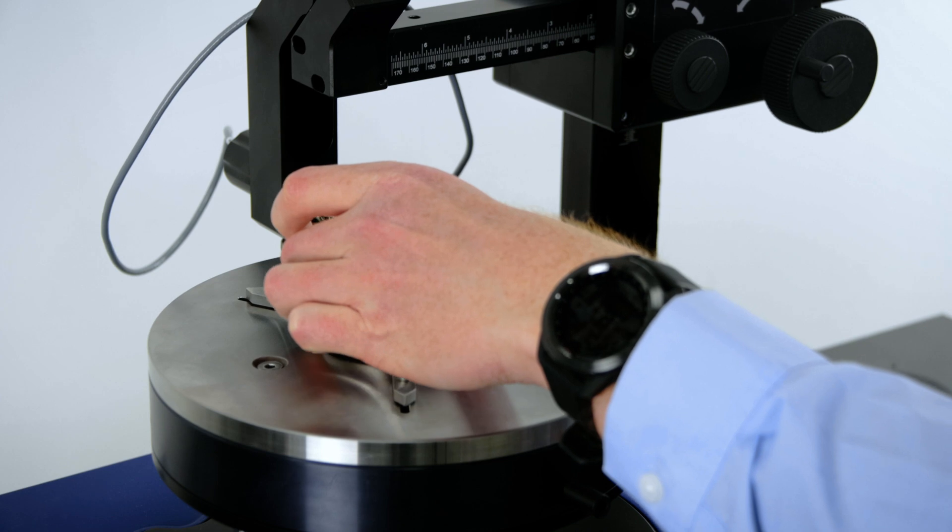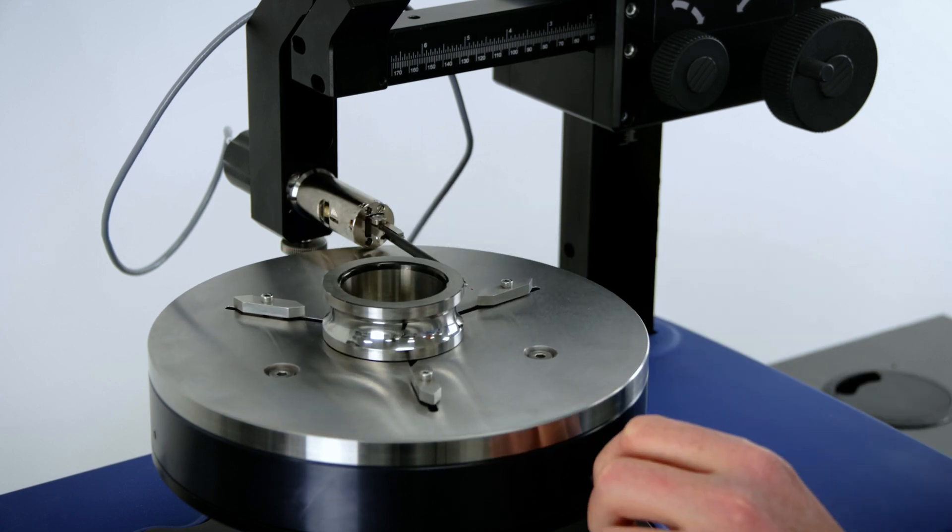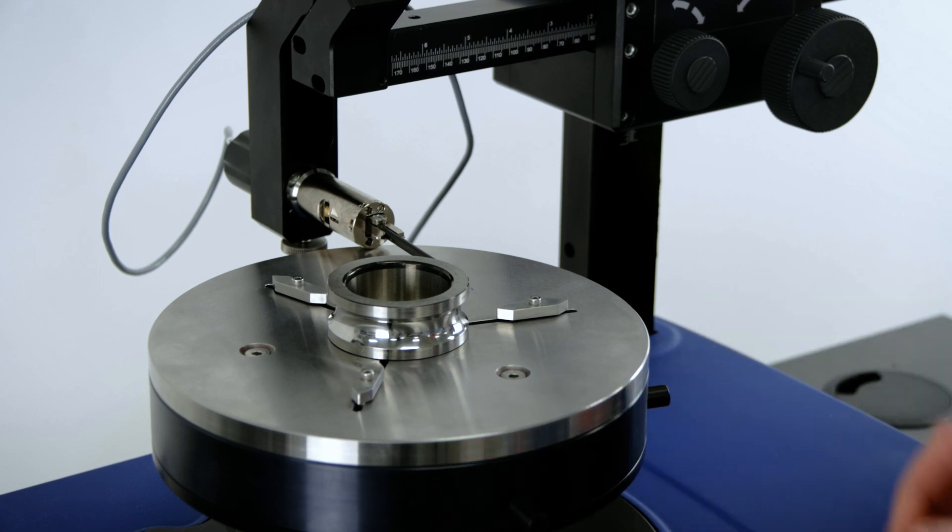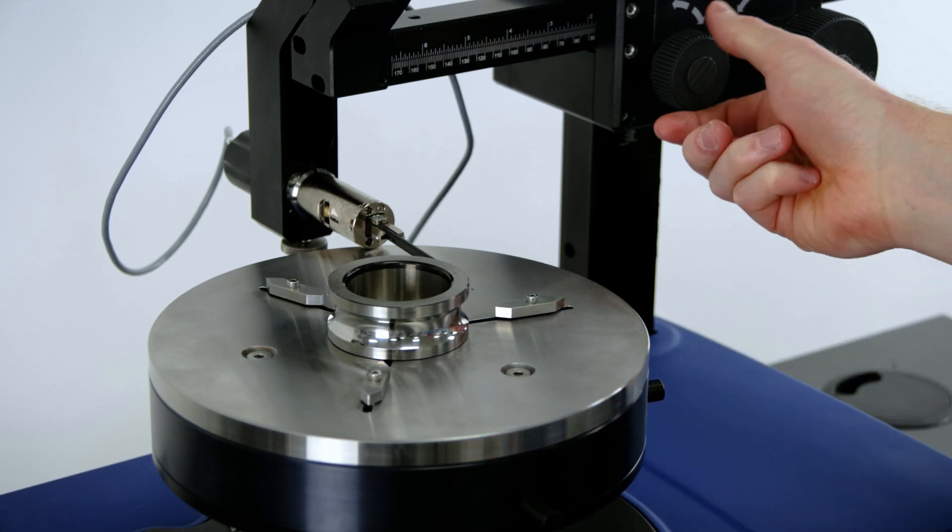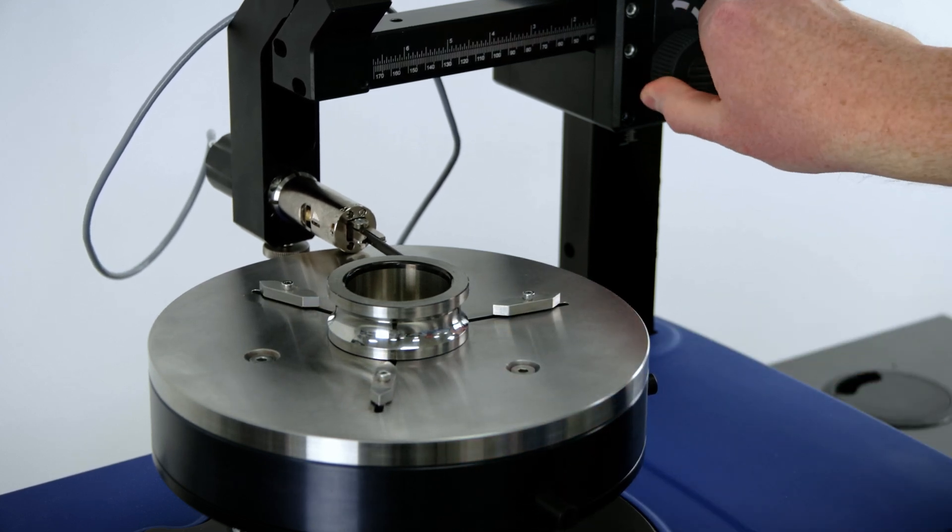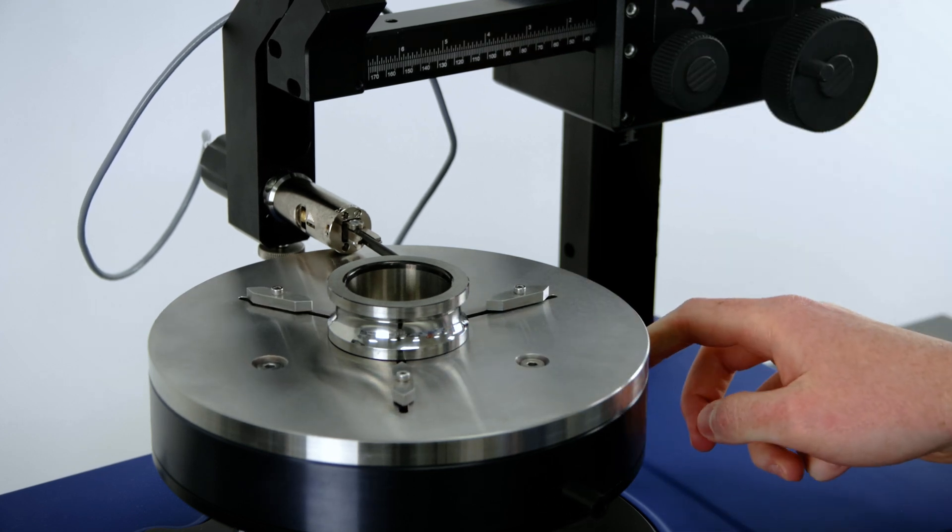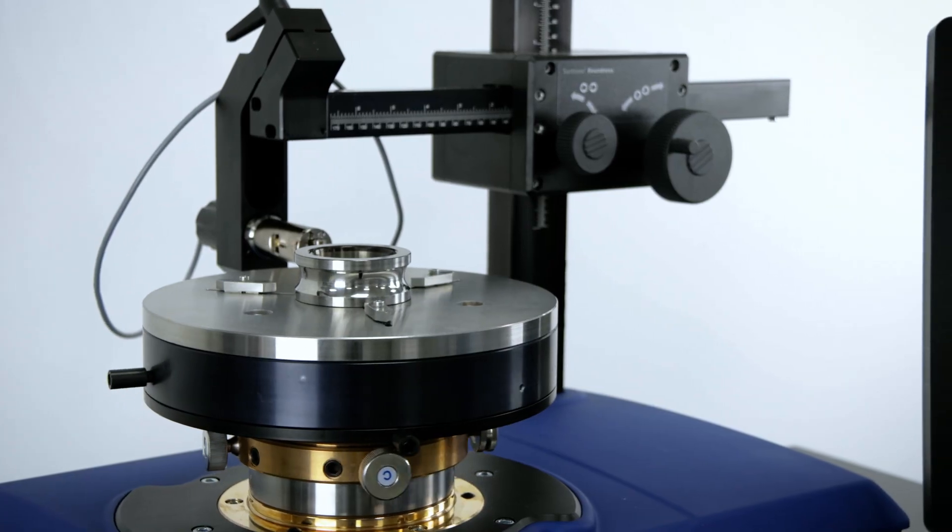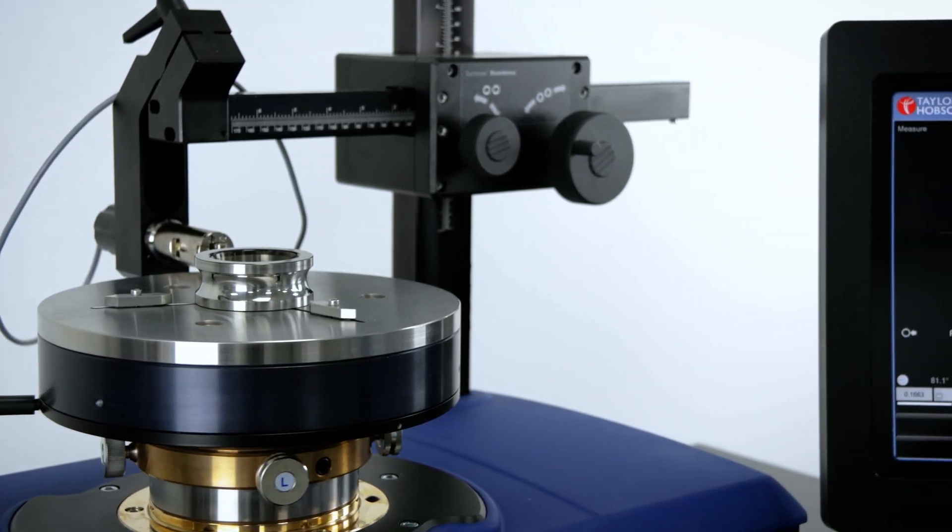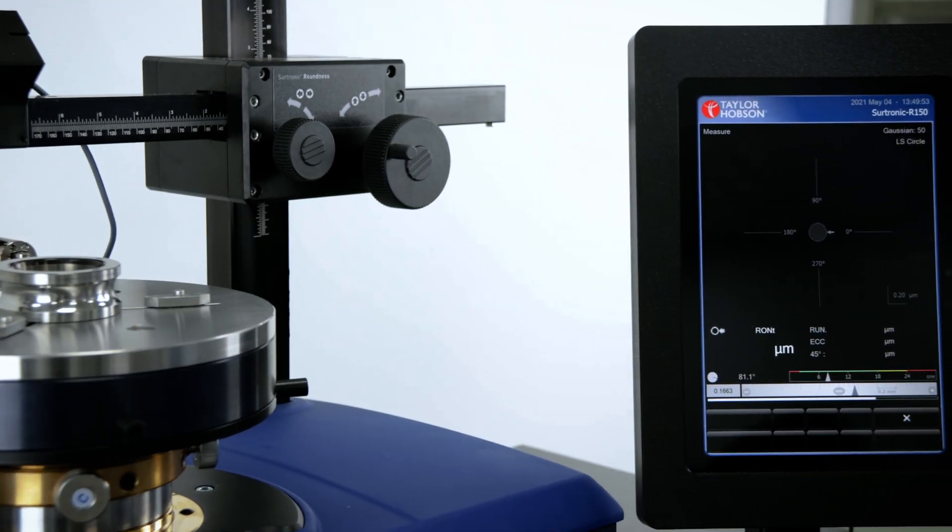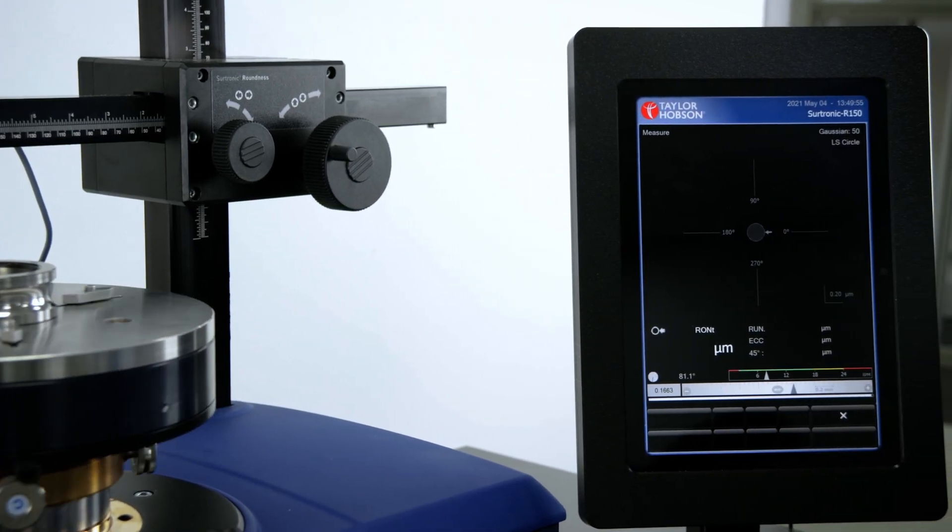To take a roundness measurement on the bearing, we place the component onto the rapid center fixture. We easily close the drawers and that centers the part. It's going to contact onto the surface. We can spin the table and click measure, and when finished, we're presented with the result.